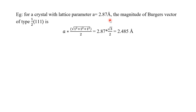For example, considering a crystal with lattice parameter a, the magnitude of a Burgers vector of type 1/2⟨111⟩ is given by the lattice parameter multiplied by the root of (1² + 1² + 1²), divided by 2. So we get a × √3/2, which amounts to approximately 2.485 Å for a lattice parameter of about 2.87 Å. That is how we find the magnitude of a Burgers vector.